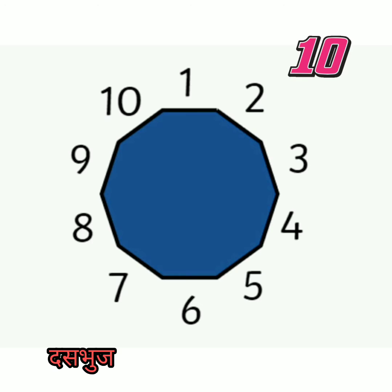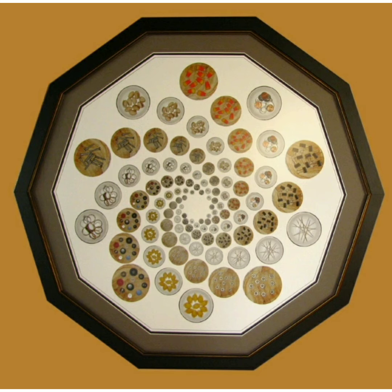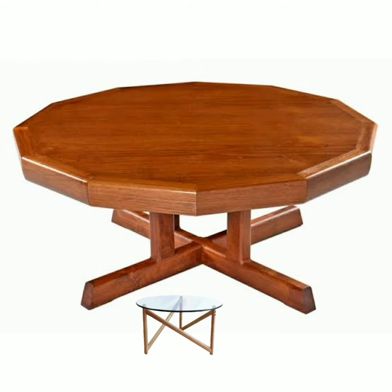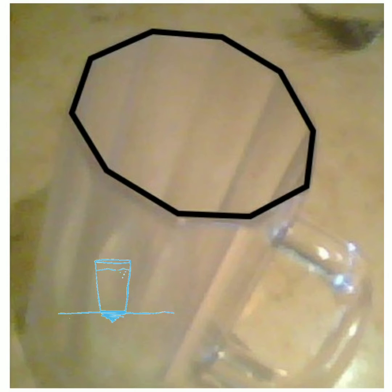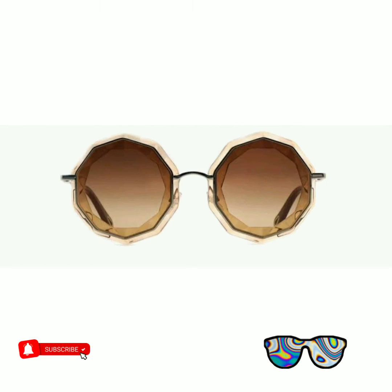Let's see a few objects which look like a decagon. This is a watch and the shape is decagon. This is a table with decagon shape. Another one is a glass which has a decagon shape, and this is a pendant which has a decagon shape, and this is a sunglass.